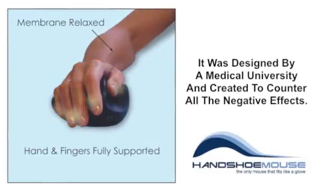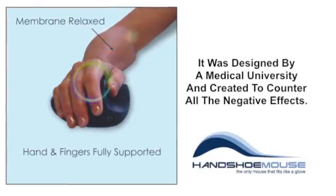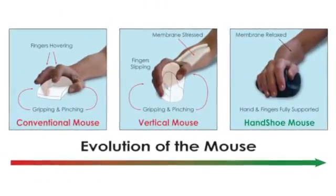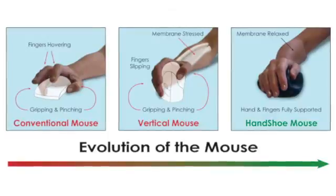It supports your fingers, hand, palm, and wrist under an ideal slanted angle. In this position, the interosseous membrane is fully relaxed and there's no more gripping and pinching.